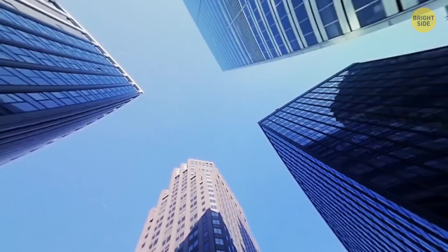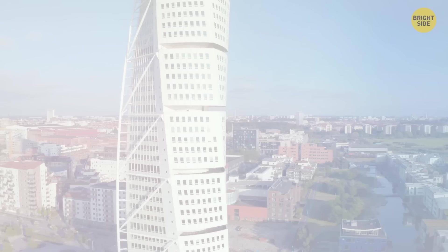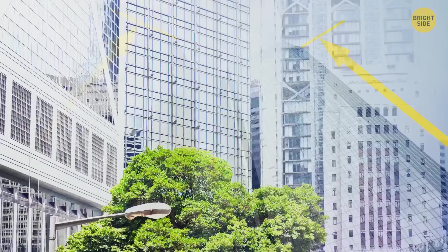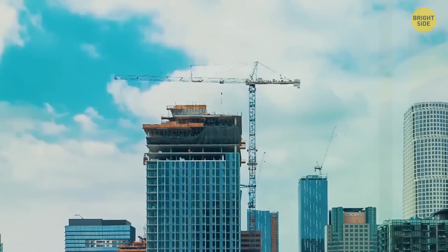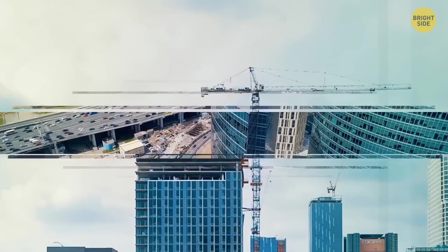Some skyscrapers have hollow floors that can contain nothing but an elevator. It's actually a way to get around height limits. Some skyscrapers are given a limit to the number of floors they can have. Because the hollow floors are empty, they add to the height of the building and make it look more impressive without increasing the number of floors and breaking the building contract. These hollow floors also help to prevent the spread of fires.